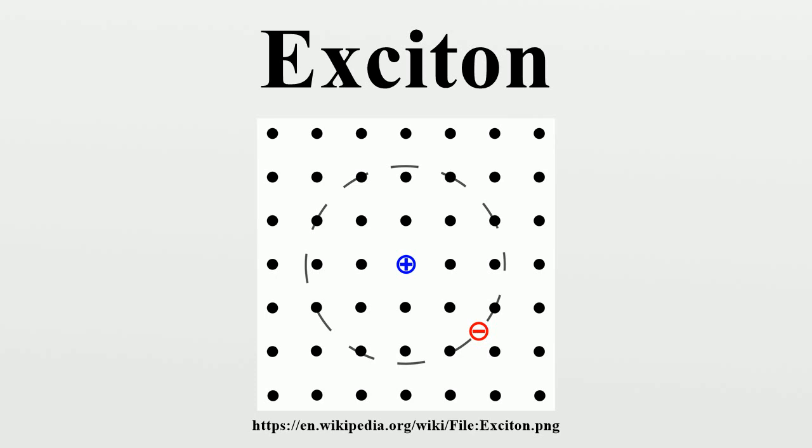In single-wall carbon nanotubes, excitons have both Wannier-Mott and Frenkel character. This is due to the nature of the Coulomb interaction between electrons and holes in one dimension. The dielectric function of the nanotube itself is large enough to allow for the spatial extent of the wave function to extend over a few to several nanometers along the tube axis.